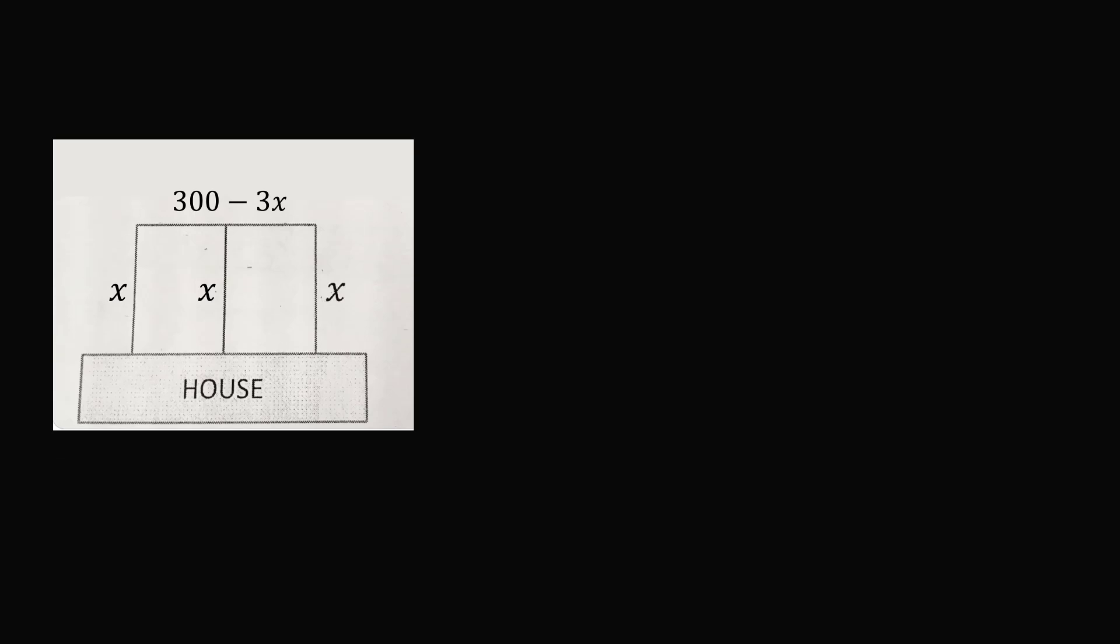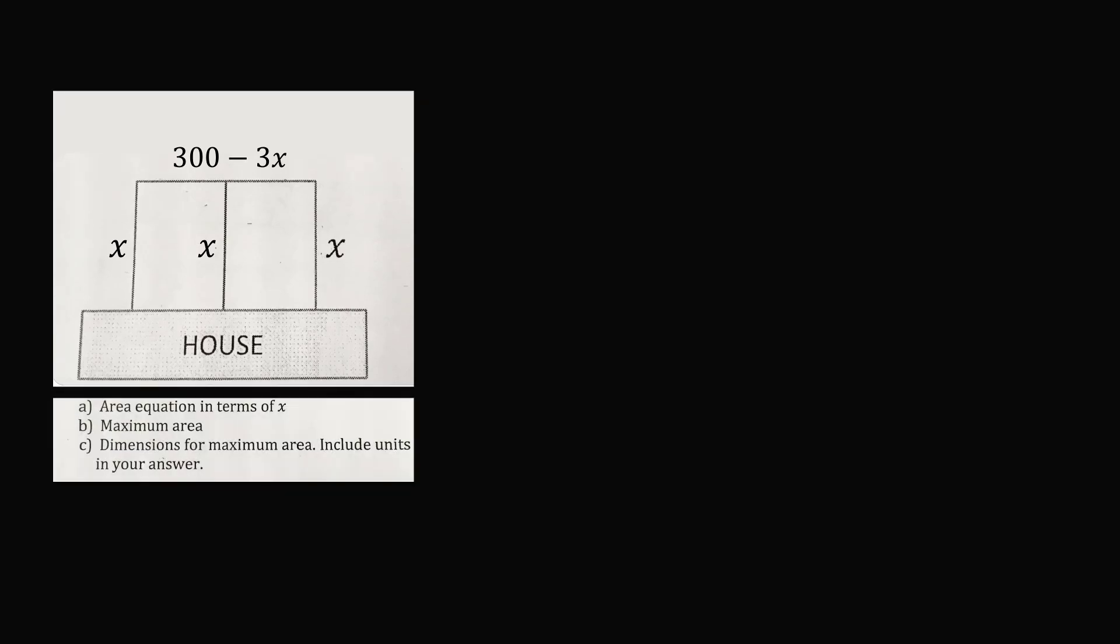So with this diagram labeled, let's solve for each part of the question. Part a, find an area equation in terms of x. The area of this enclosure will be equal to the product of its dimensions. So A(x) will be equal to x times (300 minus 3x). This is equal to 300x minus 3x squared.